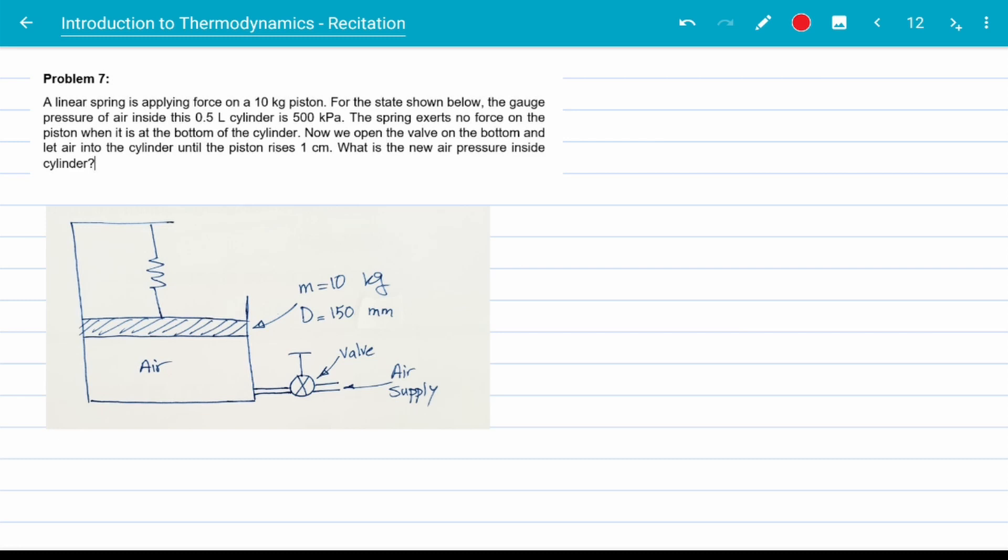The tricky part is we don't know anything about the spring force. So let's revisit an old equation from general physics, the equation of spring force. Force is the spring constant times how much the spring is compressed or elongated from its rest position. We need to find both if we want to know the spring force. We know the spring is at rest when the piston is on the bottom of the cylinder. That's our first clue. We can use it to find K or spring constant.